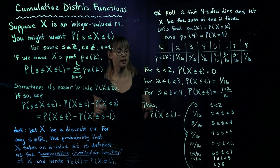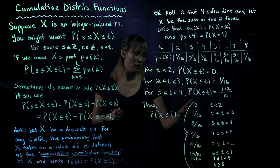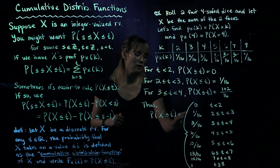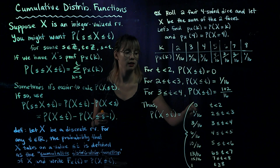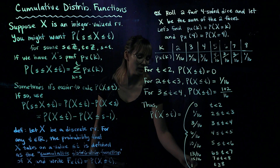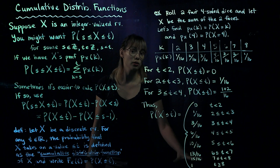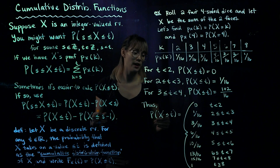One final emphasis: we need to state where the CDF equals 0 — in our case, for t less than 2 — and where it equals 1, which here is for t greater than or equal to 8. Do not forget to define your CDF for all real number values of t.